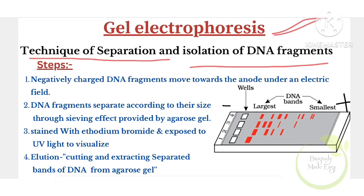In gel electrophoresis, DNA fragments are placed in a gel medium — preferably agarose gel. Agarose is an extract from seaweeds. Electricity is then applied to move the DNA fragments through the gel. This process is called electrophoresis.